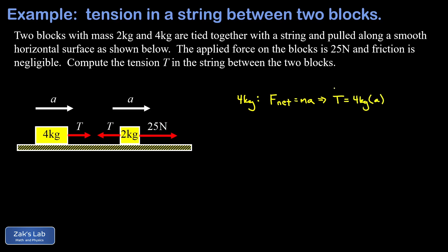And the net force there is just T. So that's equal to 4 kilograms, that's the mass, times the unknown acceleration a. Now we do a similar thing for the 2 kilogram block. We write down F net equals ma. But this time the net force is going to be 25 newtons to the right minus T, because it points to the left, that's equal to ma, so 2 kilograms, multiplied by this unknown acceleration.